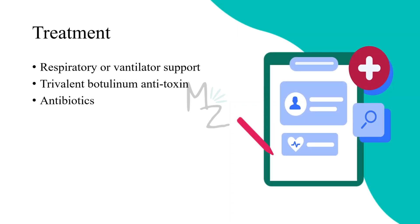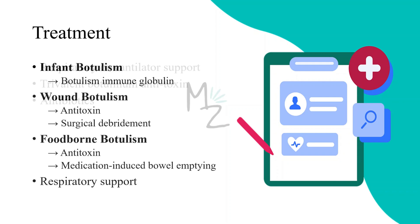Treatment plan: the first priority is respiratory or ventilator support. The second is trivalent botulinum antitoxin. The third is antibiotics. For infant botulism, botulism immune globulin is used. For wound botulism, antitoxin is given along with surgical debridement of the wound. For adult or foodborne botulism, antitoxin is used along with medication-induced bowel emptying to remove preformed toxin from the bowel and prevent further disease. Respiratory support is also provided.